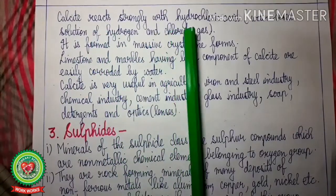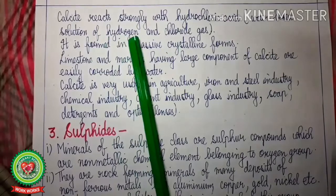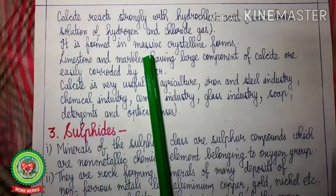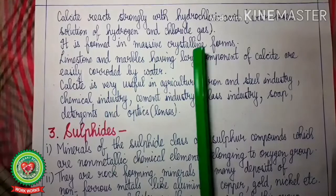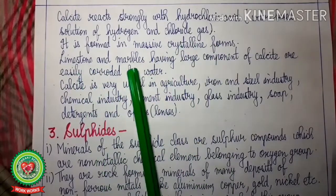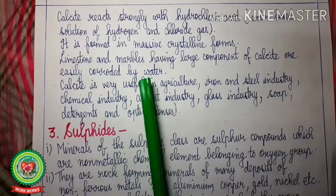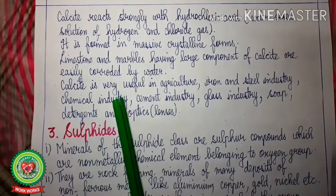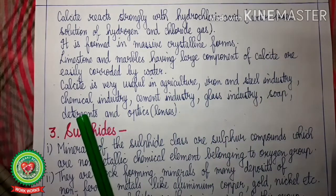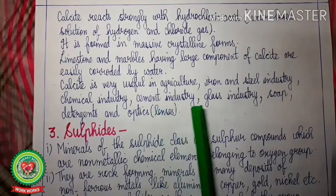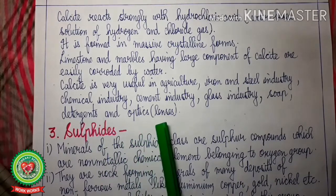Calcite reacts strongly with hydrochloric acid, which is a strong acid and a water-based solution of hydrogen and chloride gas. Calcite is formed in massive crystalline form — massive means large, crystalline means granular. Limestone and marbles having large components of calcite are easily corroded by water. Calcite is very important for agriculture. It is used in the construction industry, chemical industry, cement industry and glass industry. It is also used to make soap, detergents and optics such as lenses.